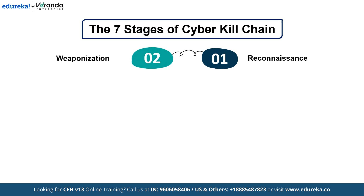Stage 2 is Weaponization: attackers create malicious payloads tailored to the target's vulnerabilities, developing new malware or modifying existing tools to bypass defenses. Stage 3 is Delivery: this is when the malicious payload reaches the target through methods like phishing emails or exploiting hardware and software vulnerabilities.